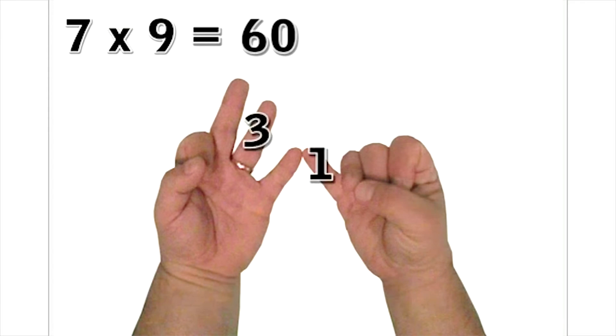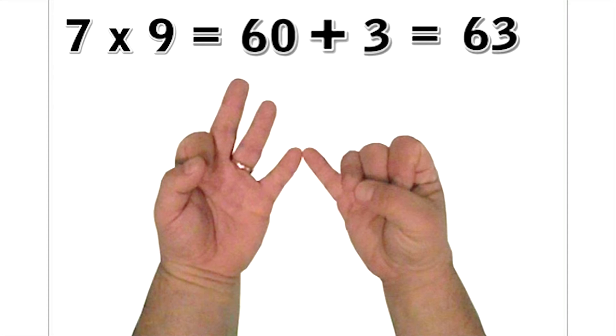Now, the number of fingers left standing on each hand are multiplied together, which is 3 by 1, which is 3. Adding together our first total of 60 to our multiplication result of 3, we get 63. And yes, 7 times 9 is 63.